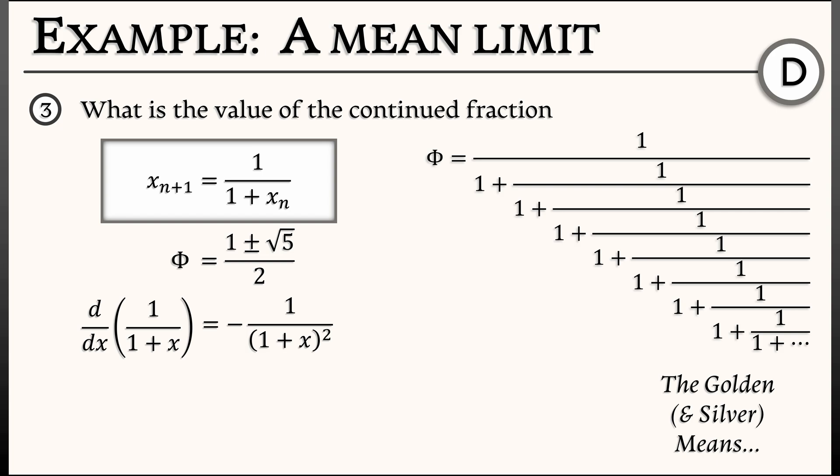Now, if I evaluate that at the golden mean, at (1 + √5)/2, that's a number that's bigger than 1. And so when I take 1 plus that in the denominator, square it, that derivative is giving me something that is strictly between -1 and 0. So, it's less than 1 in absolute value, that means this is a stable equilibrium. And that, indeed, is going to be the value of this continued fraction.